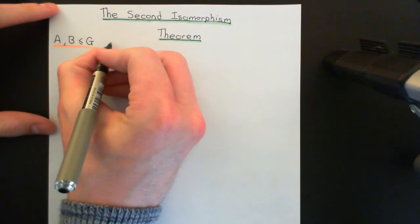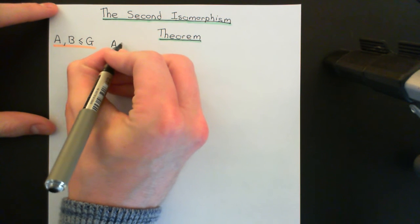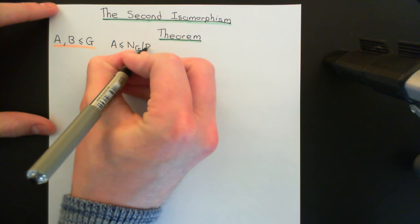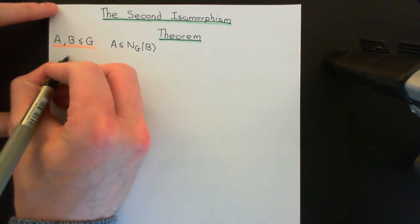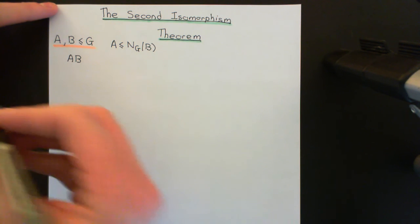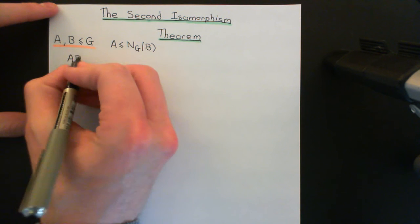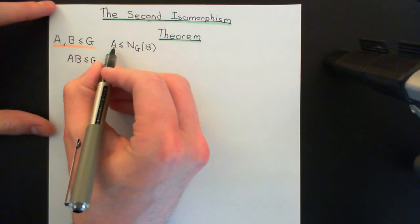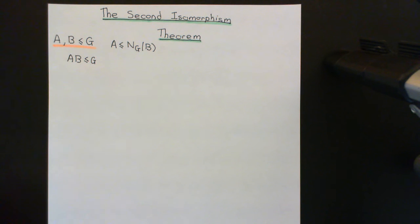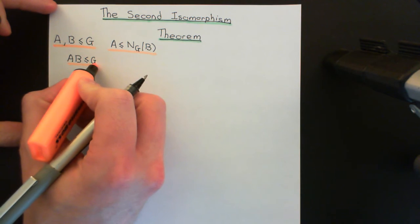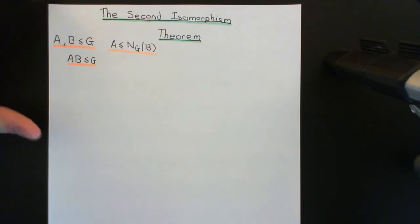We are going to assume that A is contained within the normaliser of B in G. So when we take the product of these two subgroups, as we learned in the previous video on the product of two subgroups, we will end up with a subgroup of G. We saw in the previous video that if A is contained within the normaliser of B in G, then the product of the two subgroups will in fact be a subgroup itself of the group capital G.